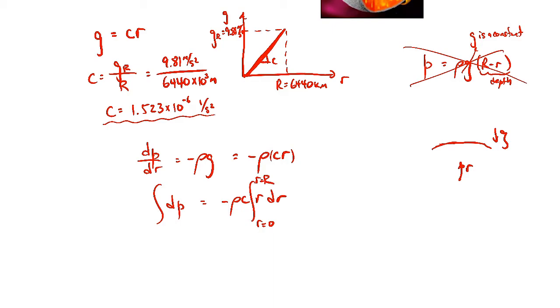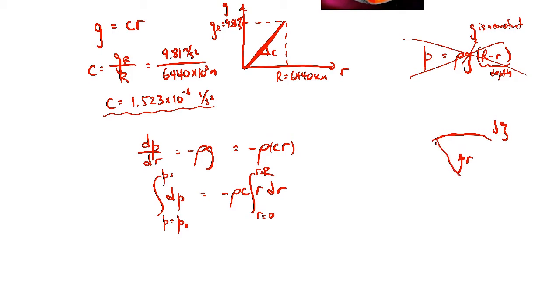And then the pressure goes from, I'll call it p naught, that's the pressure at the center of the earth, to the pressure at the free surface. So this pressure here is the pressure at capital R, which would be the pressure on the free surface.